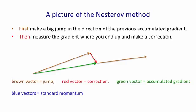Then again, at the place where we end up, we measure the gradient, and we go downhill. That corrects any errors we made, and we get our new accumulated gradient.